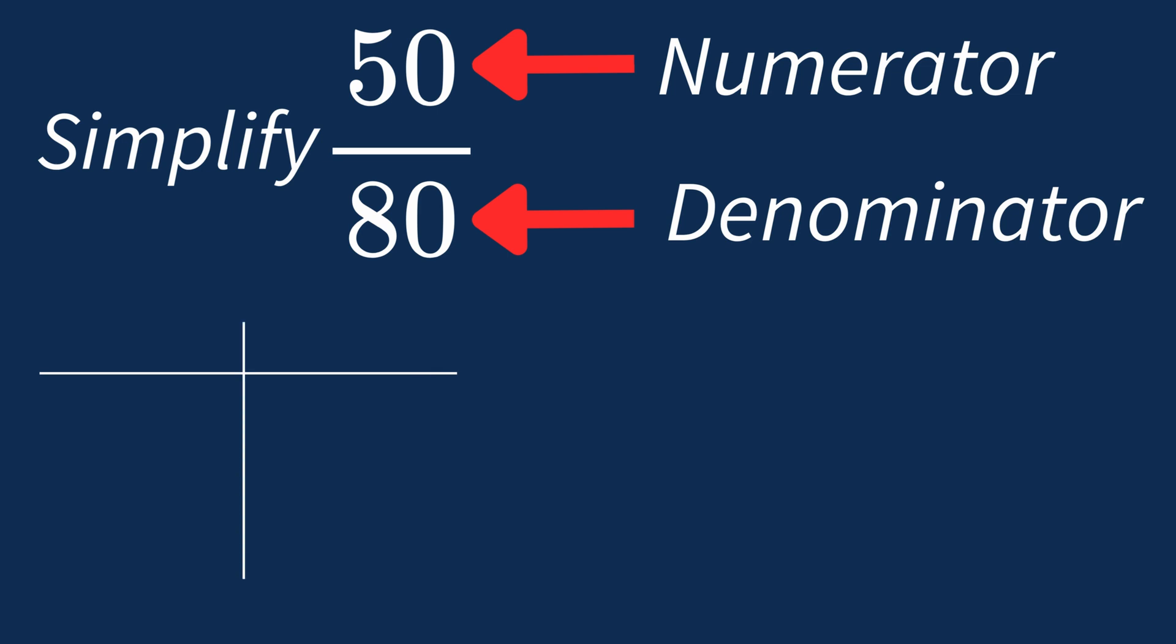First, let's list out the factors for each. For 50, the factors are 1, 2, 5, 10, 25, and 50.